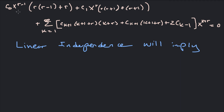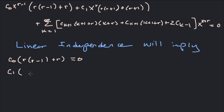Factoring out c₀ x^(r−1) leaves r(r−1) plus r, and factoring out c₁ x^r leaves r(r+1) plus (r+1). Combining the three series into a single series from k equals 1 to infinity, we factor out x^(k+r) and get a bracket of terms. This equals 0 if and only if all coefficients equal 0, by linear independence.